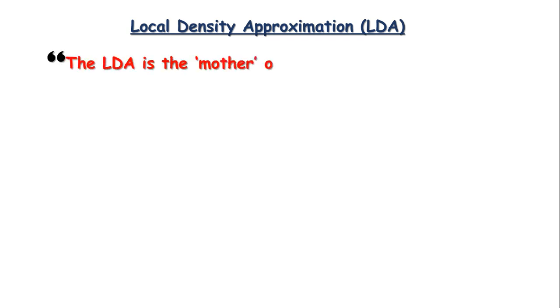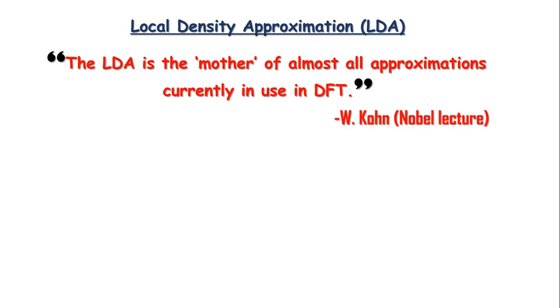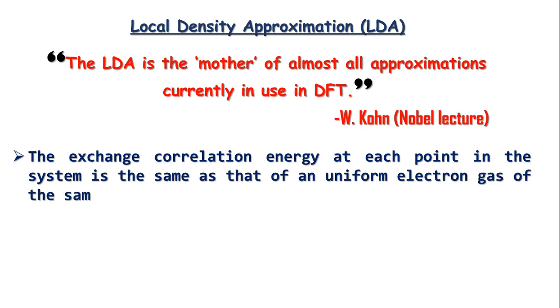The simplest form of the exchange-correlation functional is the Local Density Approximation, abbreviated as LDA, in which the calculation is based on the simplest electron distribution, the homogeneous electron gas. Actually, the LDA is the mother of almost all approximations currently in use in DFT, as said by Walter Kohn in his Nobel lecture. In this approximation, the exchange-correlation energy at each point in the system is the same as that of a uniform electron gas of the same density.